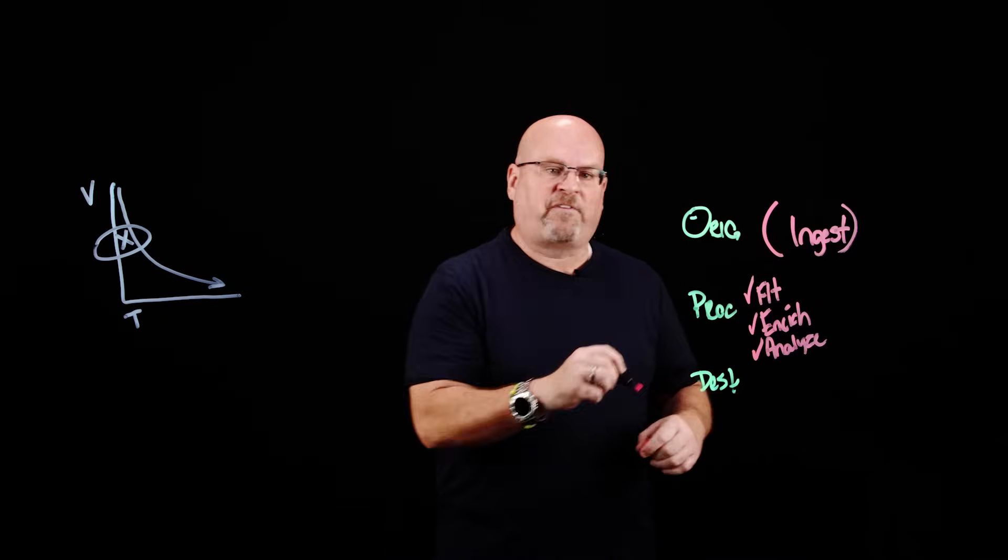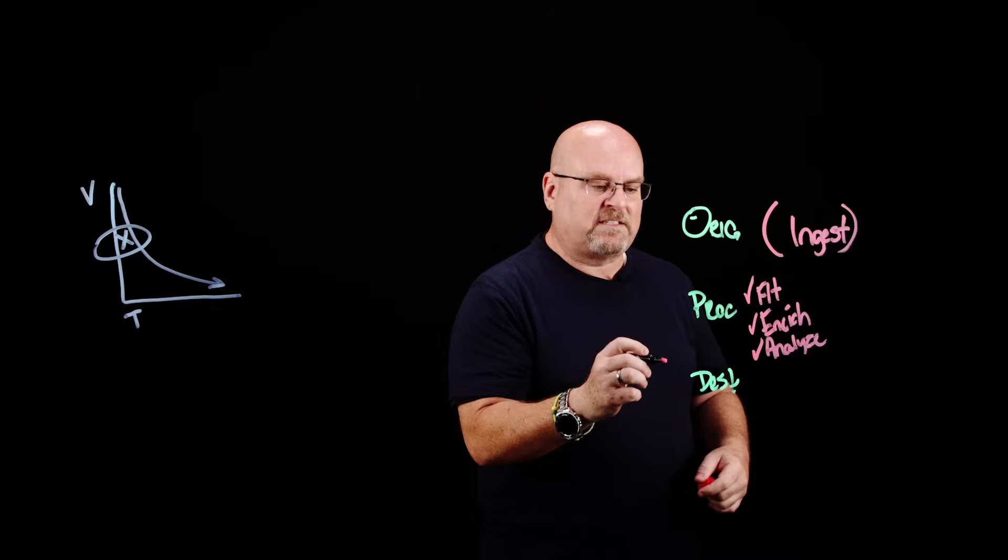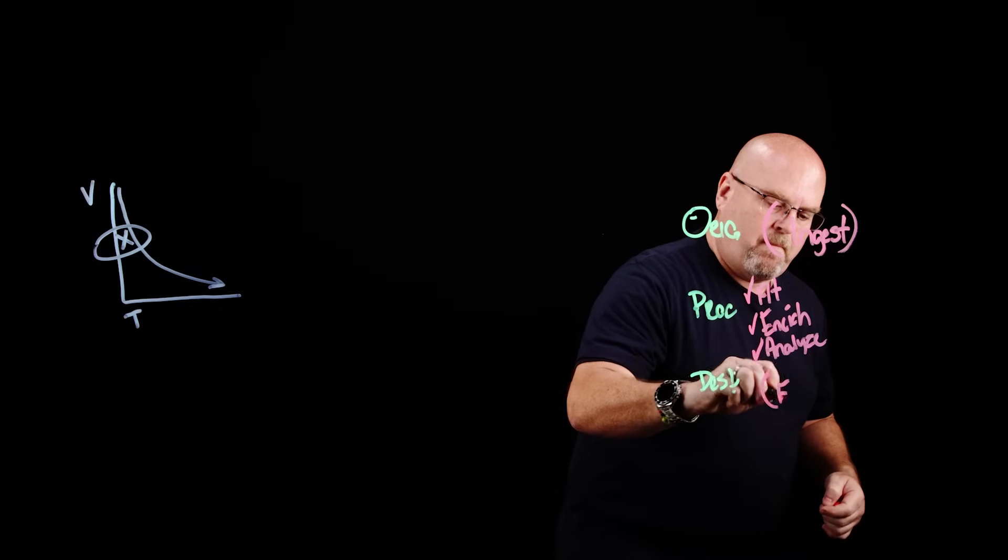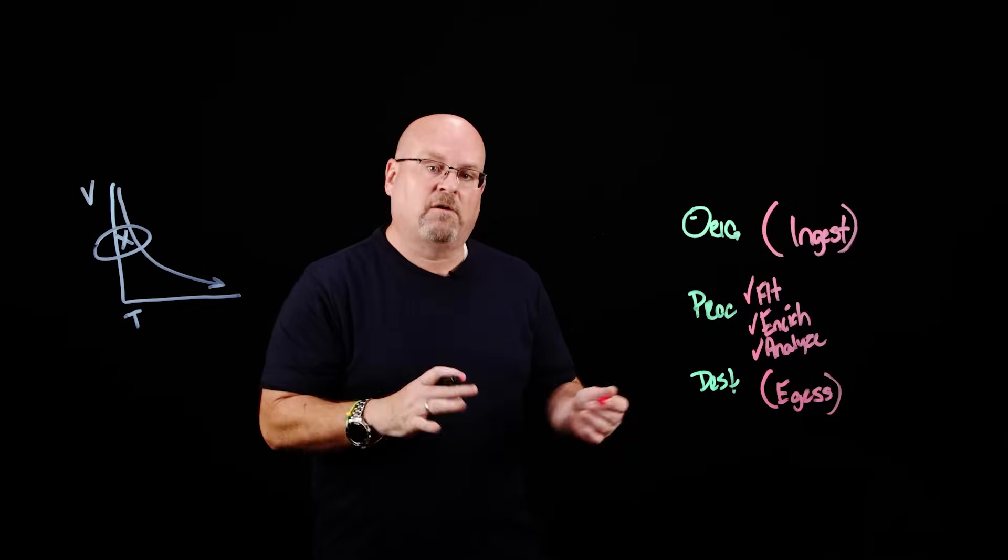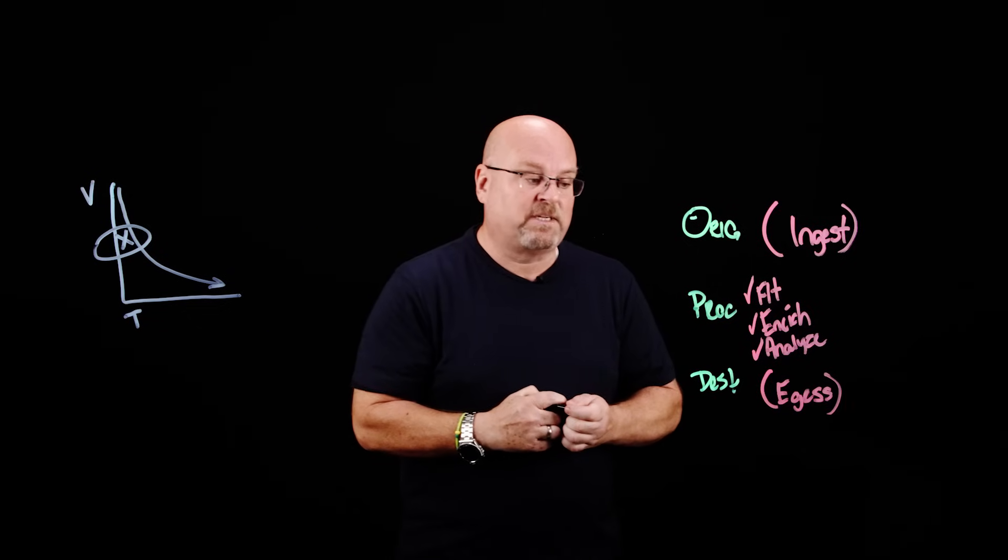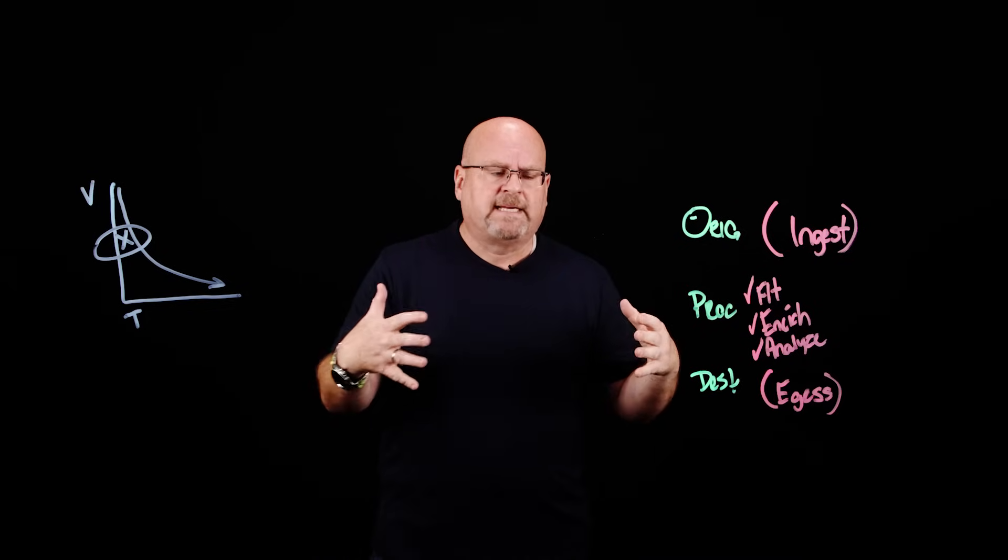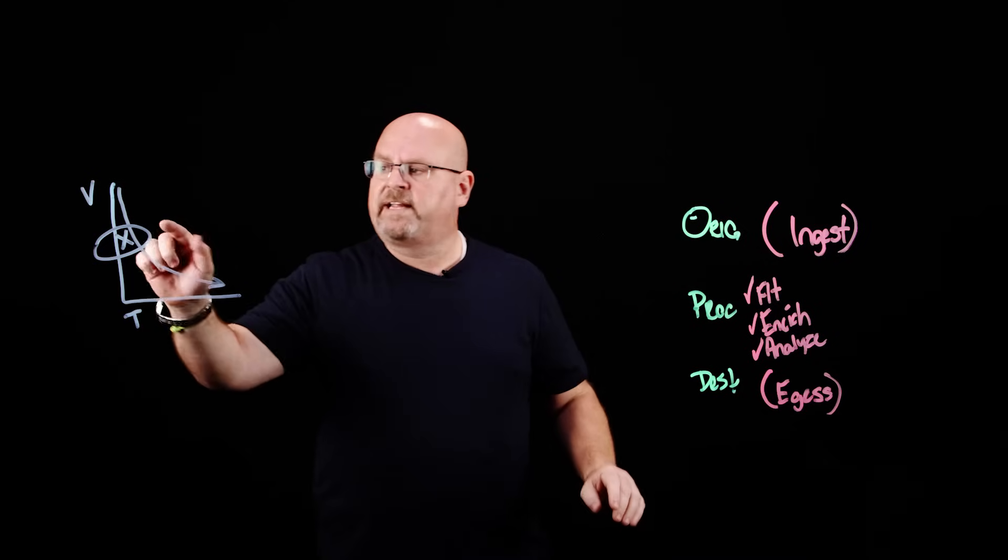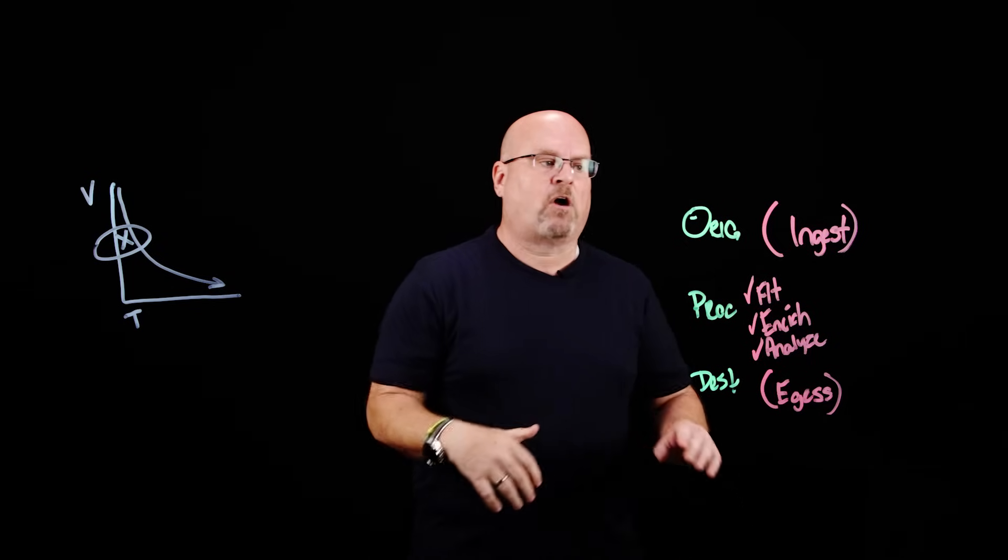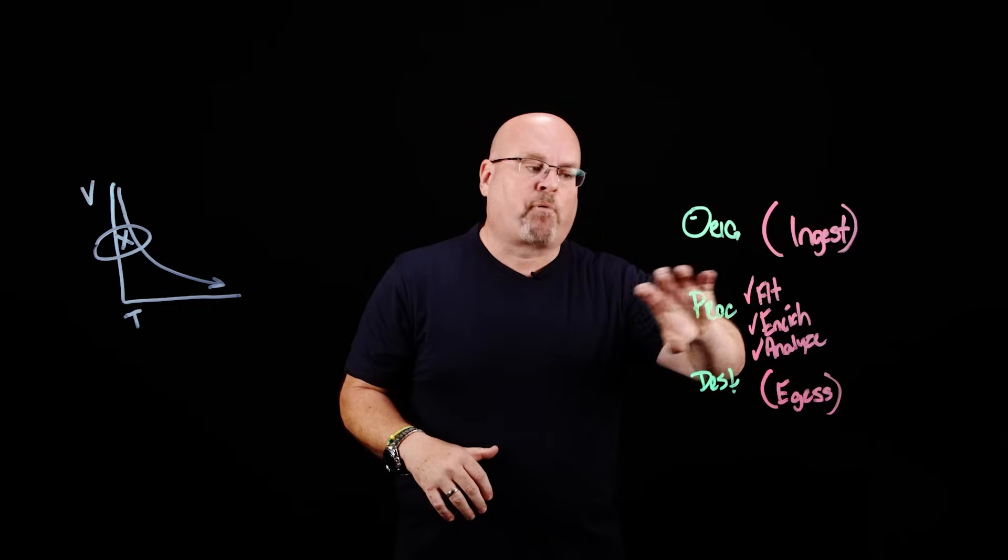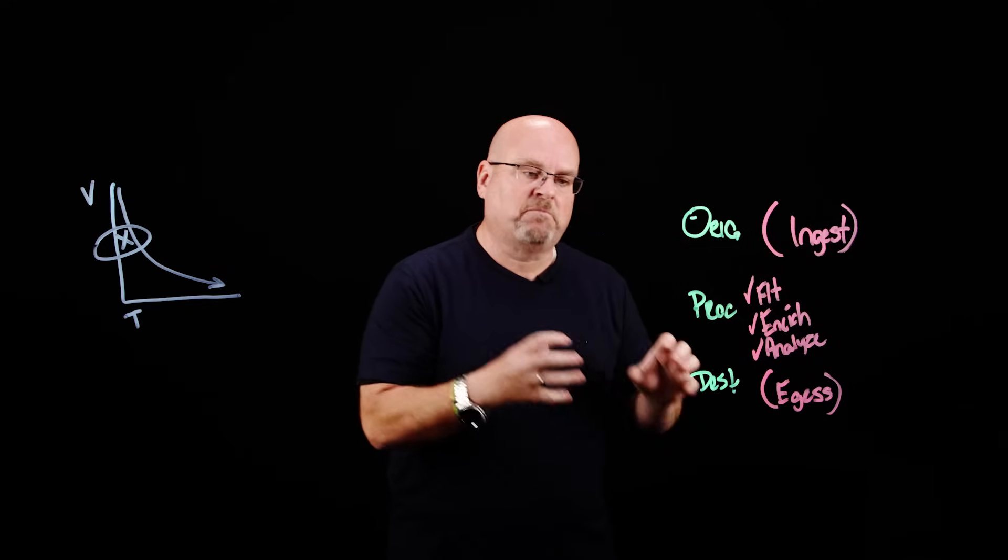So once we analyze this information, we get context about what's the data telling us, what is happening in the data. Then lastly, we're going to take and we're going to egress that information for somebody else that might be interested in another area of the business. But overall, a streaming architecture contains a way for you to capitalize on maximum value. So we're doing this in real time at wire speed. As the data is coming across, we're ingesting it from the origins. We're processing it, filtering, enriching, and analyzing. And then we're egressing that points of interest.